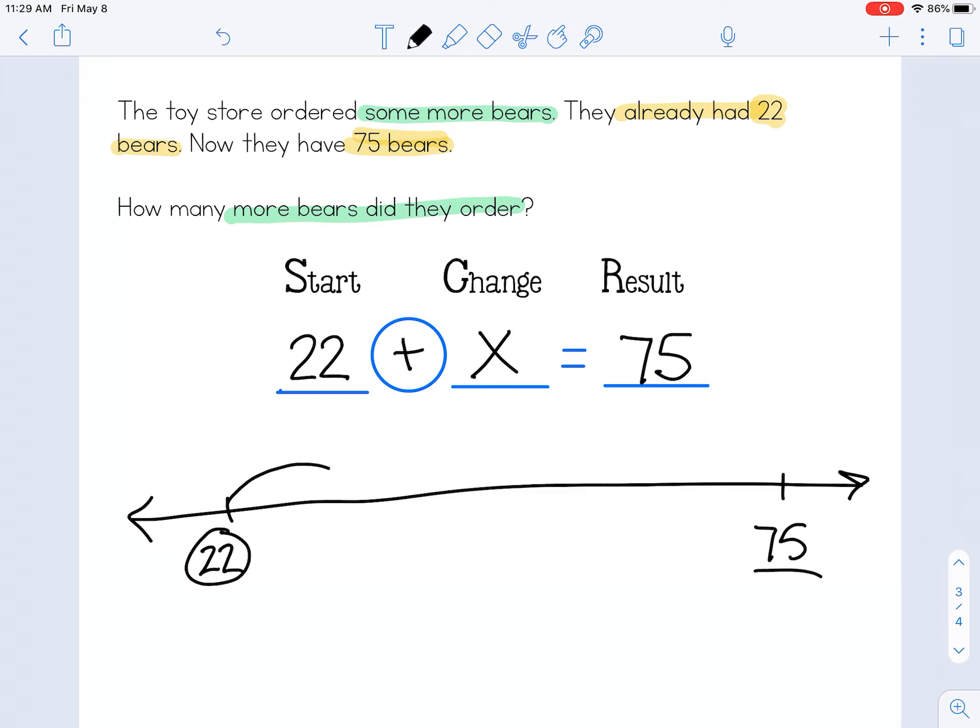So again, using my strategies, I'm going to make a 10 by adding 8 to get to 30. And then I know 3 plus 4 is 7. So I know 30 plus 40 is 70. And then I have 5 more to go.